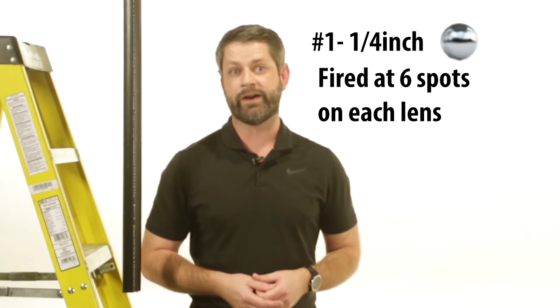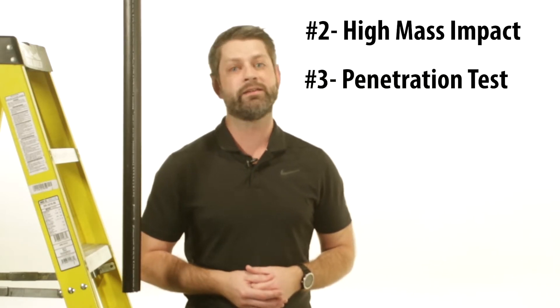To rate glasses, ANSI has developed four different tests. The first, dropping a 1-inch steel ball from 50 inches onto the lens. If the glasses pass this test, they are given the standard Z87.1 rating. For the glasses to get the Z87 Plus rating, they must also pass three additional tests: a quarter-inch steel ball fired at six specific lens spots, the high mass impact test, and the penetration test.